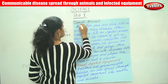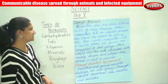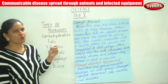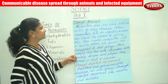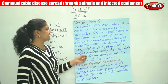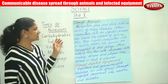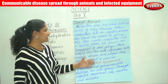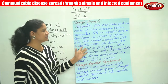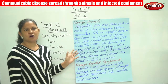Diseases can also spread through animals. Mosquitoes, flies, and fleas act as vectors of many diseases. When mosquitoes bite an infected person, they become carriers of the germs. When these infected mosquitoes bite a healthy person, the germs are transferred to that person, thus making him or her sick.